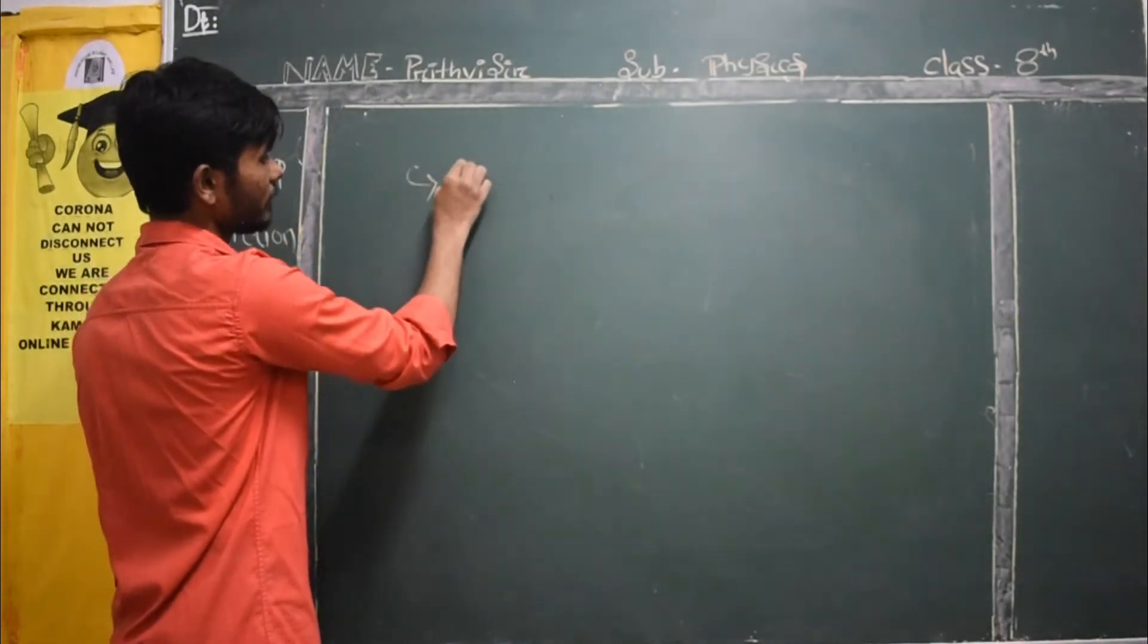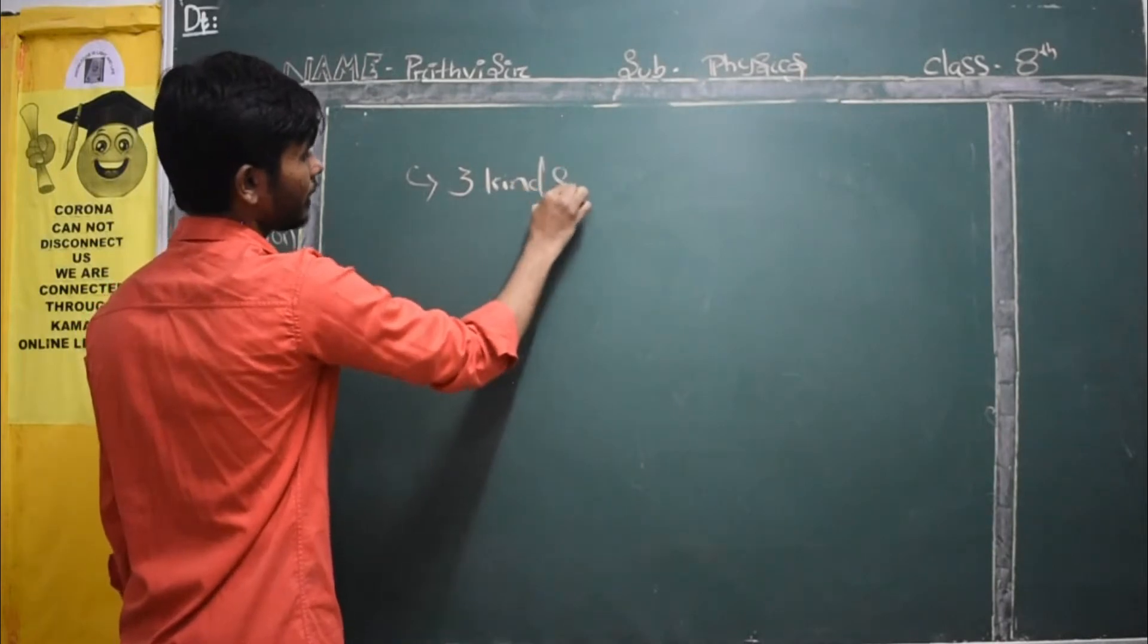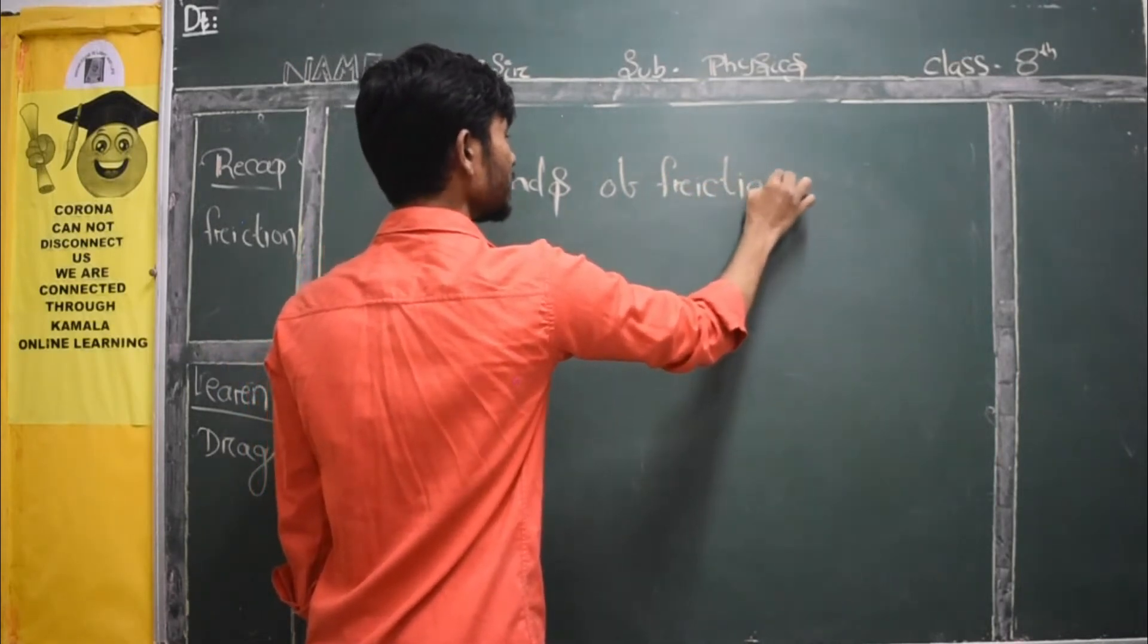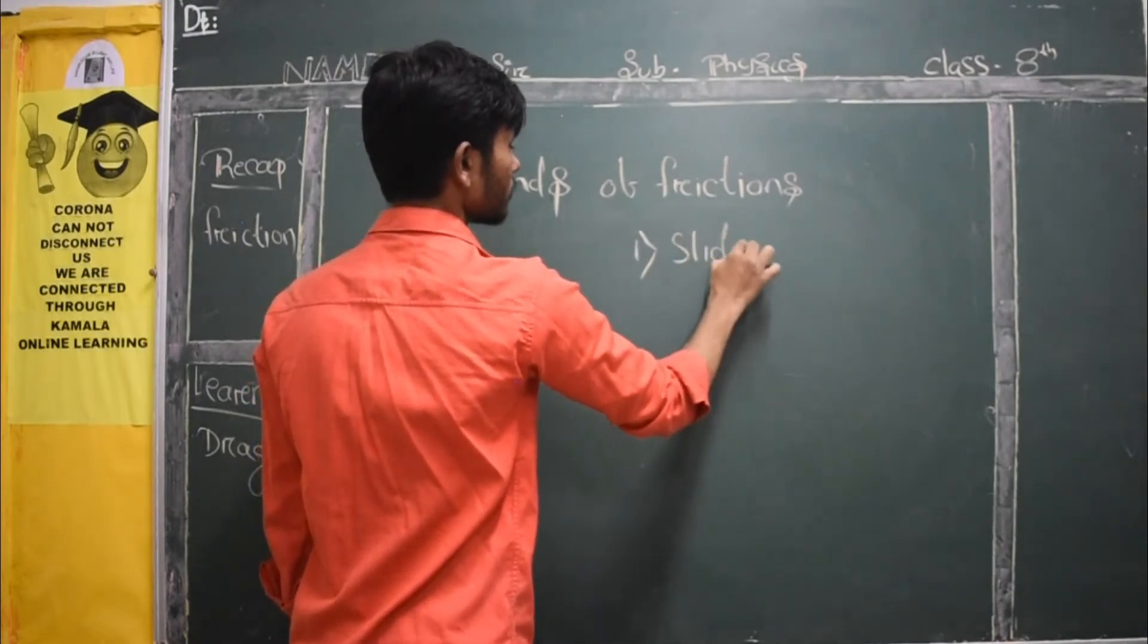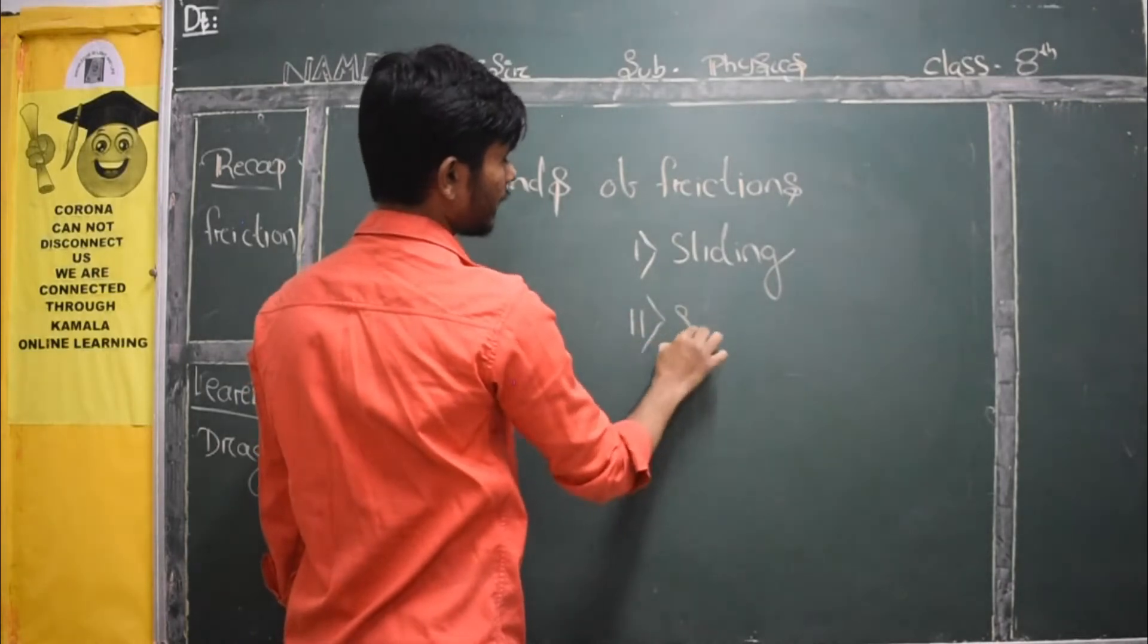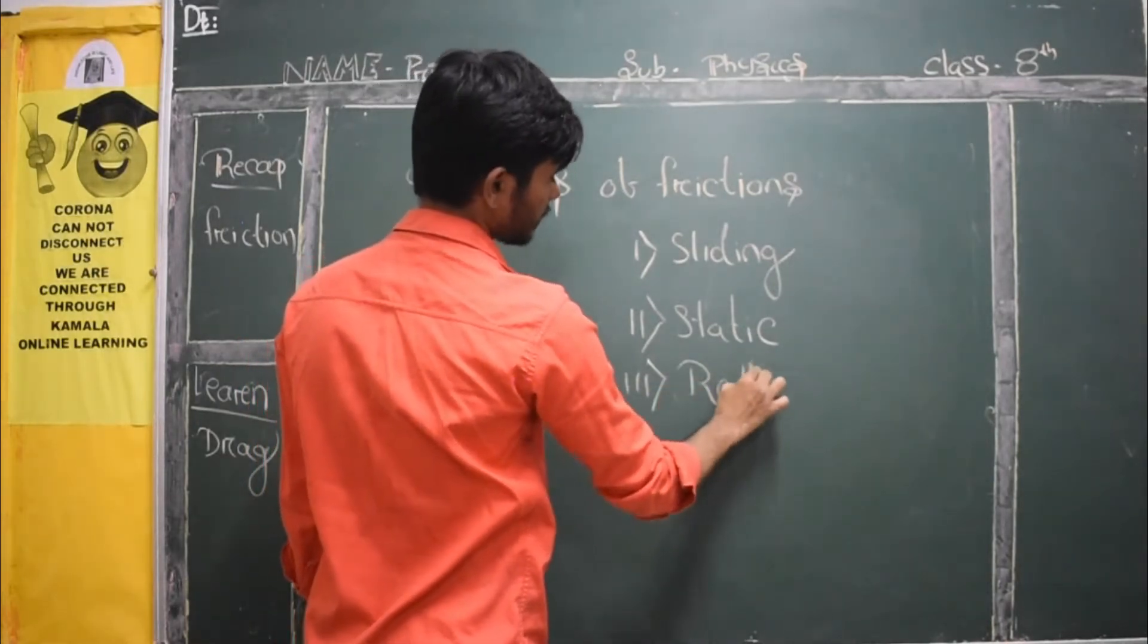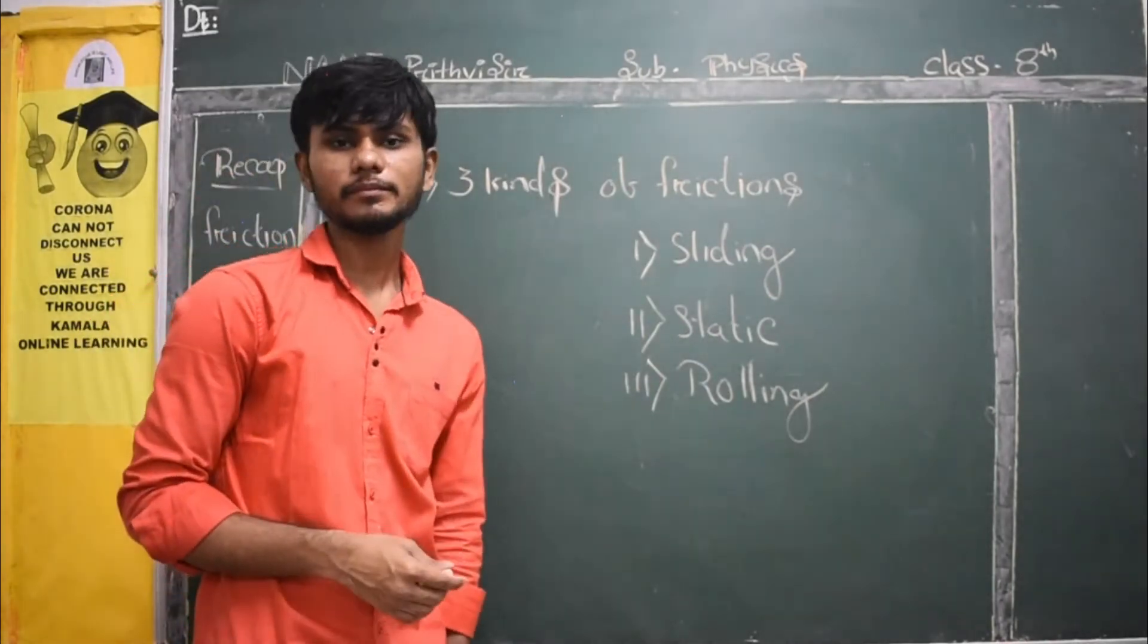We know three kinds of frictions, right? I won't write here properly, but I'll give you a rough idea. We know three kinds of frictions. First question, answer, friends. What are they? Sliding, static, rolling. Yes, three frictions are there. Now, you can give an example of all of them.